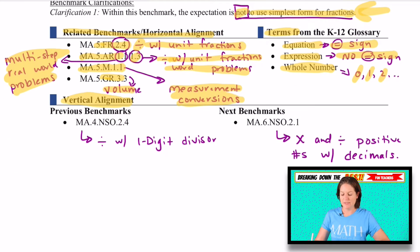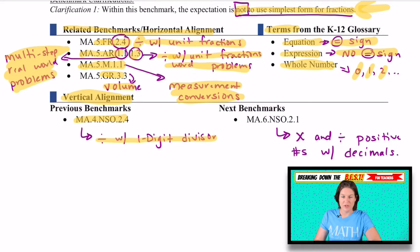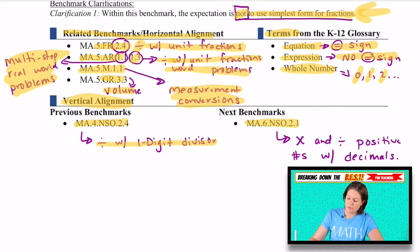Next we have the vertical alignment. I love this because we just talked about what other standards will be aligned in fifth grade, but now let's see where they're coming from in fourth grade. And in fourth grade, they should be coming with this benchmark 4.NSO.2.4, which is division with a one digit divisor. Now, as of recording this video, this is the first year of implementation for the best standards. So students this year are coming up with those common core standards. And luckily they should have learned how to divide with a one digit divisor last year using the common core standards.